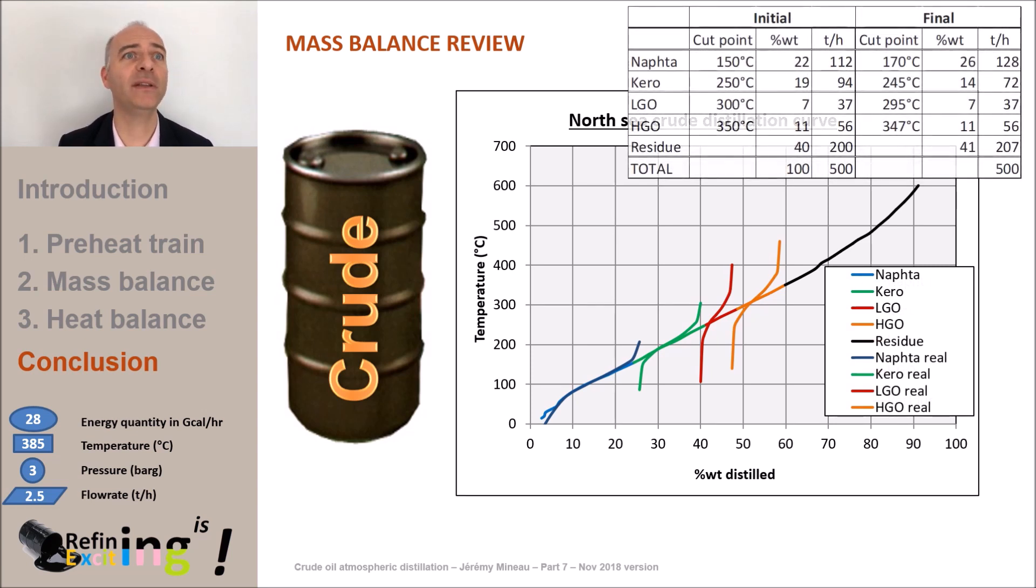So, the naphtha kerosene cut point has been increased from 150 to 170 degrees C. The kerosene light diesel cut point has been slightly modified from 250 to 245 degrees C. Finally, we see on the graph that the product distillation curves are not as described in the first video. These curves have a much more important slope.